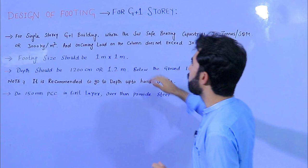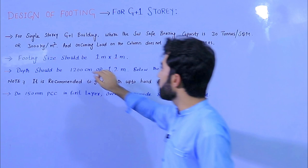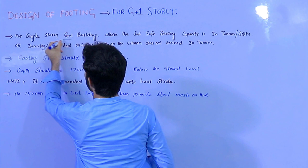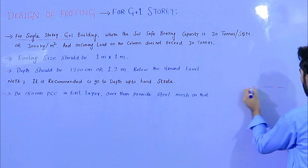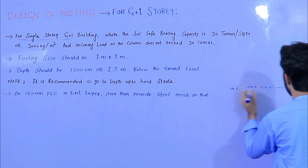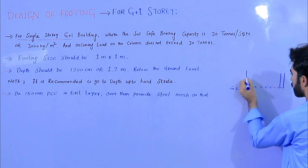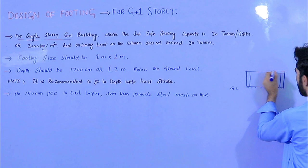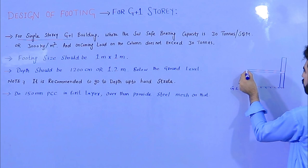The topic is design of footing for G plus one story. For a G plus one building, this means ground level, ground floor, and first floor with a slab on top — that is called G plus one story.